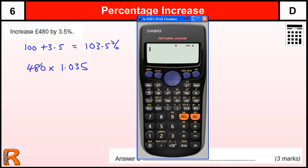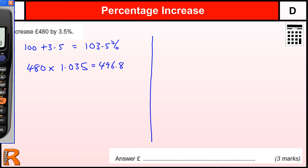If we can do this quickly, we can just type this straight into the calculator, and we get the answer 496.8. We need to be careful because this is money, it is in pounds, so we need to put the extra zero on the end to get 496.80. You would actually lose a mark if you did not have the zero on the end; you would only get 2 out of 3 marks.